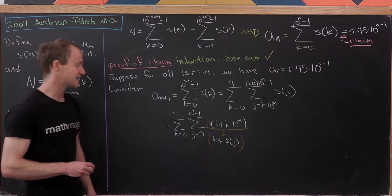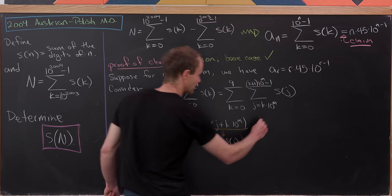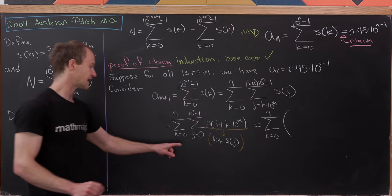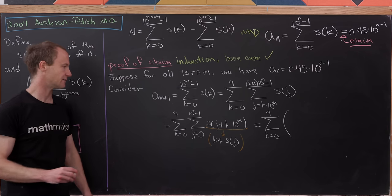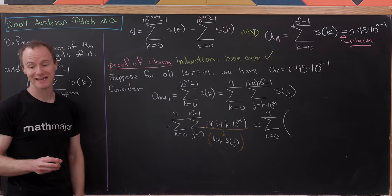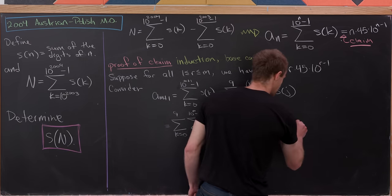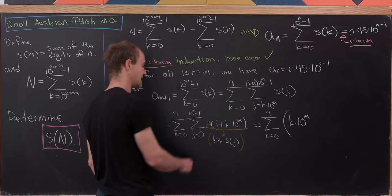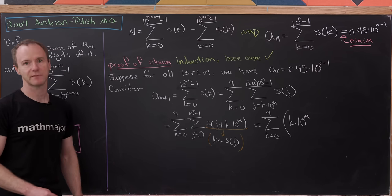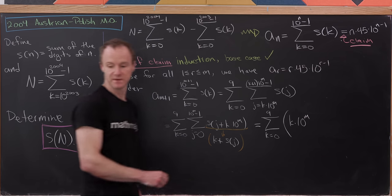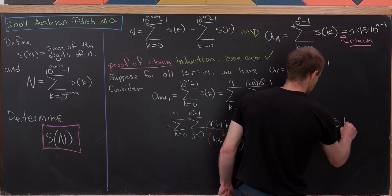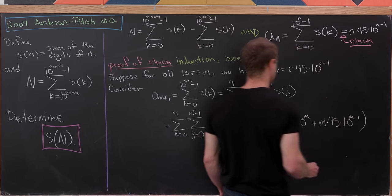Now we can evaluate the inner sum. Summing k from j = 0 to 10^m − 1 is summing a constant over 10^m terms, giving k × 10^m. Summing S(j) from j = 0 to 10^m − 1 is exactly A_m by our induction hypothesis, which equals m × 45 × 10^(m−1).